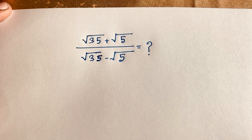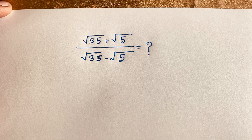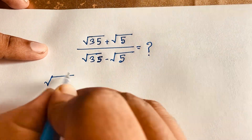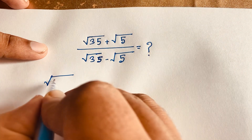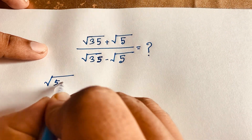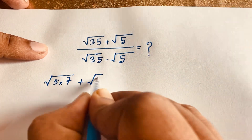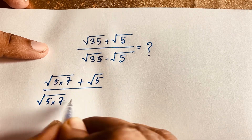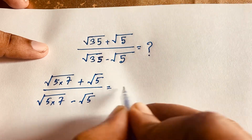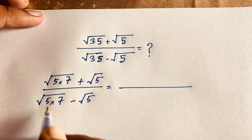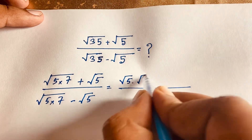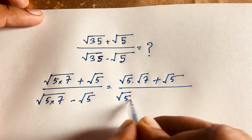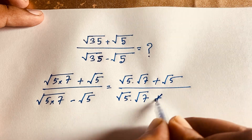Hello everyone. In this video we solve this radical math question. The question is: square root of 35 plus square root of 5, over square root of 35 minus square root of 5. I can write this as square root of 5 times 7 plus square root of 5, over square root of 5 times 7 minus square root of 5.